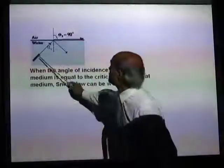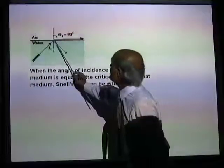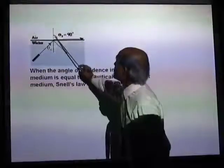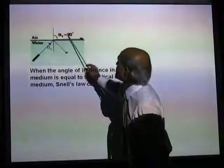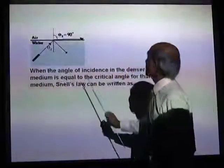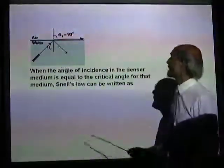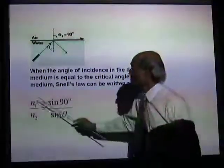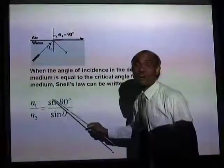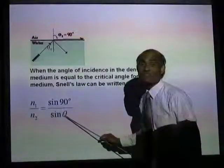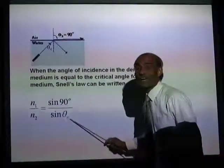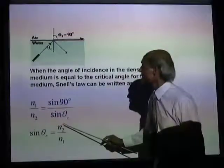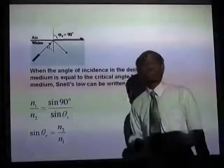Here is the illustration: the incident ray, the refracted ray, the angle of refraction is 90 degrees — so the angle of incidence in the denser medium for which the angle of refraction is 90 degrees is called the critical angle. When the angle of incidence equals the critical angle, Snell's law can be written as N1 divided by N2 equals sin of angle of refraction divided by sin of angle of incidence. When angle of refraction is 90 degrees, the angle of incidence is called the critical angle theta C, and therefore sin theta C equals N2 over N1, because sin 90 is 1.